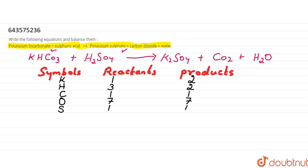The problem is only with potassium and hydrogen. There is one potassium atom on the reactant side but two on the product side. Hydrogen is also unbalanced: three atoms on the reactant side and two on the product side. So we need to balance them.